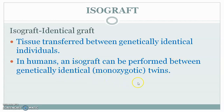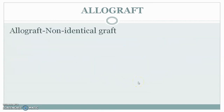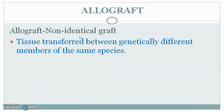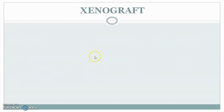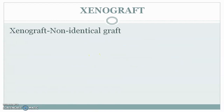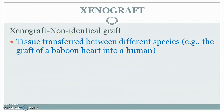Allograft means non-identical graft — tissue or organ transferred between genetically different members of the same species. For example, human organ grafts such as kidney, heart, or liver transplanted from one individual to another. Xenograft is very rare; it is a non-identical graft between different species — tissue or organ transferred between different species.